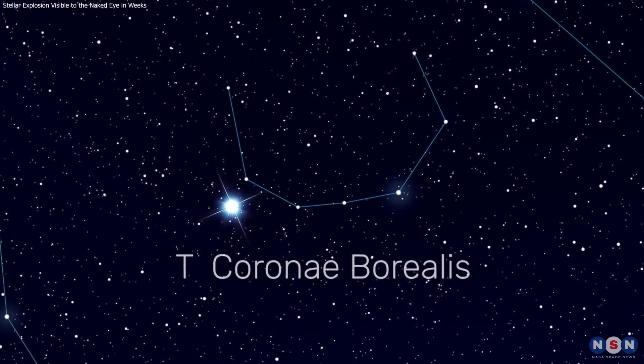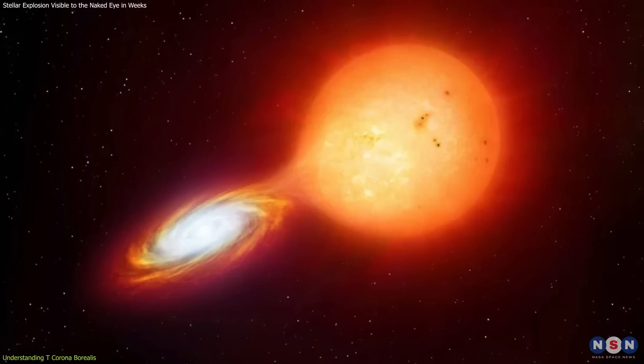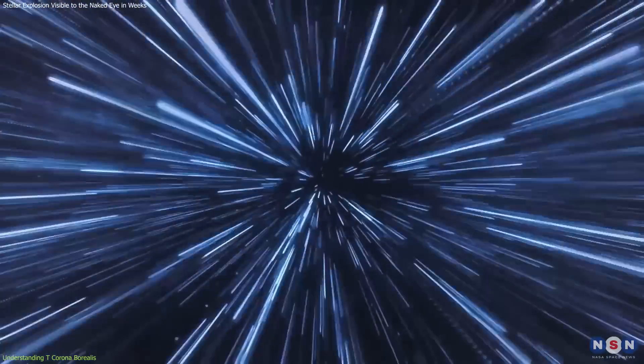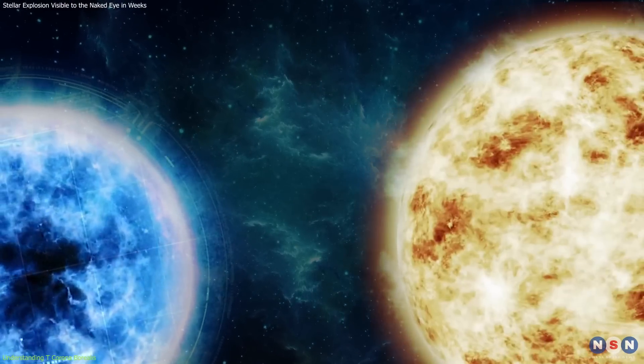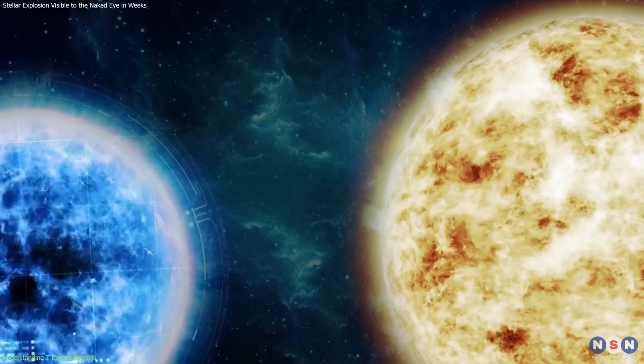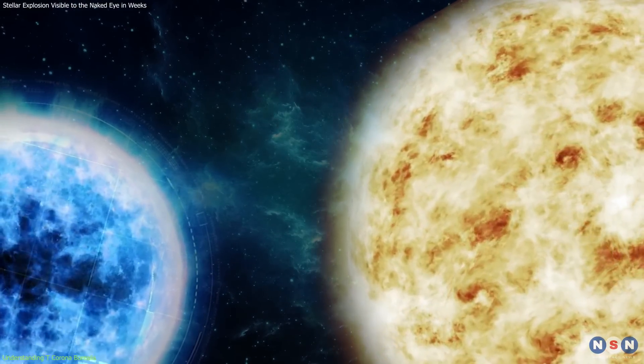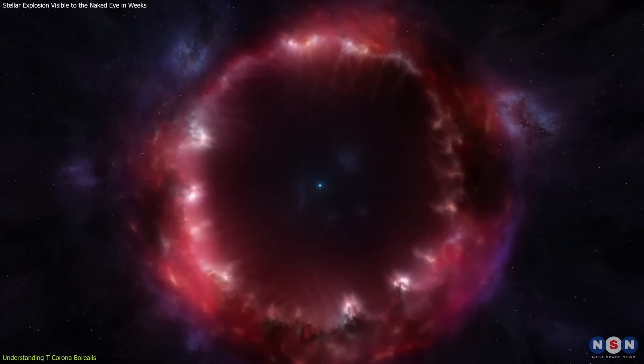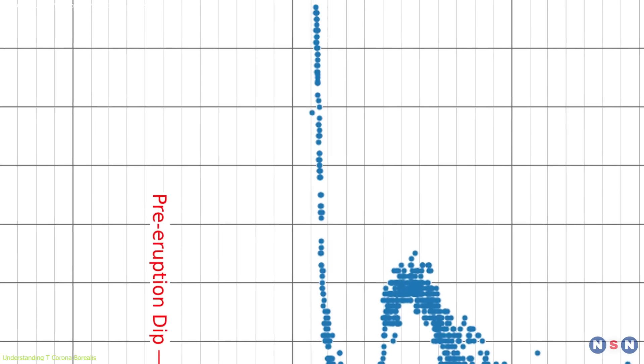T Corona Borealis, commonly referred to as TCRB, is not just any star system but a recurrent nova located about 3,000 light years from Earth. This binary star system, consisting of a white dwarf and a companion red giant star, orbits each other with a period of approximately 227.6 days. Historical records have chronicled its notable outbursts in 1866 and 1946, each marked by a significant increase in brightness.